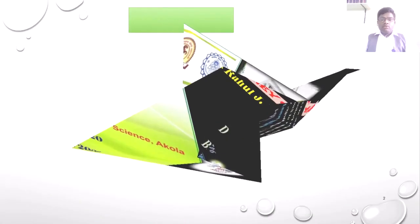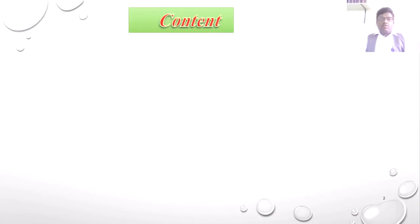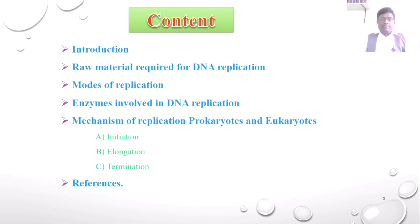Today we are going to discuss the history of DNA, then the different raw materials required for DNA replication, the different modes of DNA replication, and the different enzymes which play a crucial role. Lastly, we will discuss the different mechanisms of replication in eukaryotes: initiation, elongation, and termination.